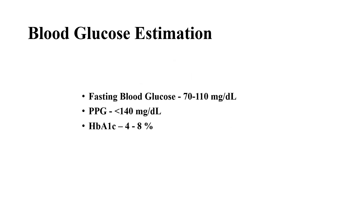The first very important parameter is blood glucose estimation. For fasting, ideally it should be 8 to 12 hours of overnight fasting, then we take the blood. The normal fasting blood glucose is 70 to 110 mg per dL. For postprandial glucose, we take blood 90 to 100 minutes after taking the meal, and it should not exceed 140 mg per dL.